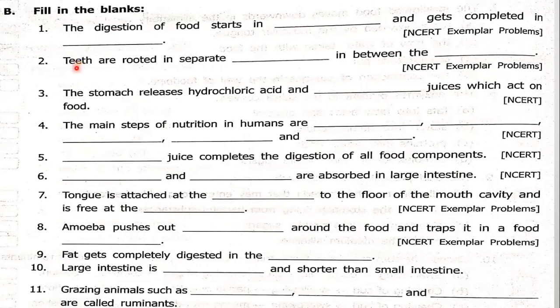Second question: teeth are rooted in separate DASH in between DASH. The answer is — teeth are located in separate sockets in between the gums.